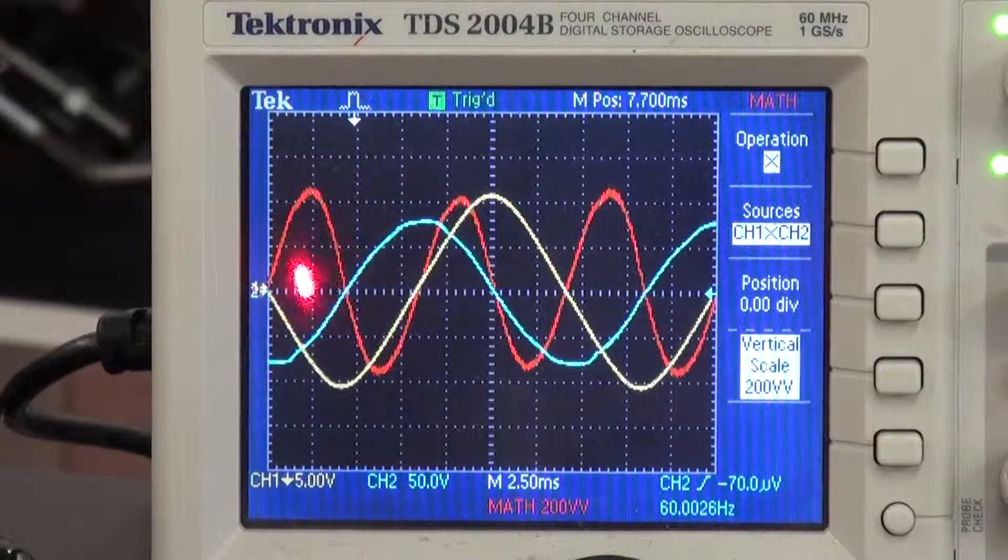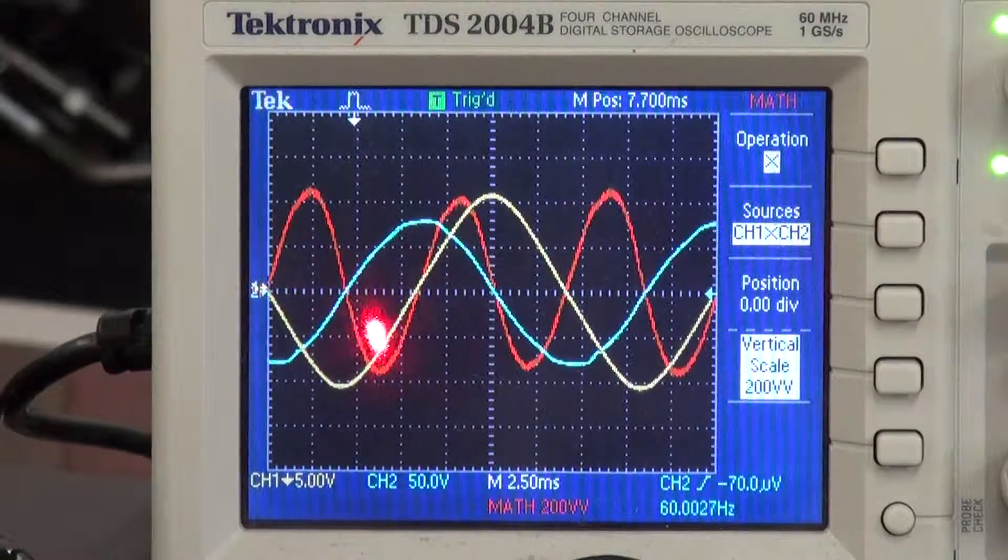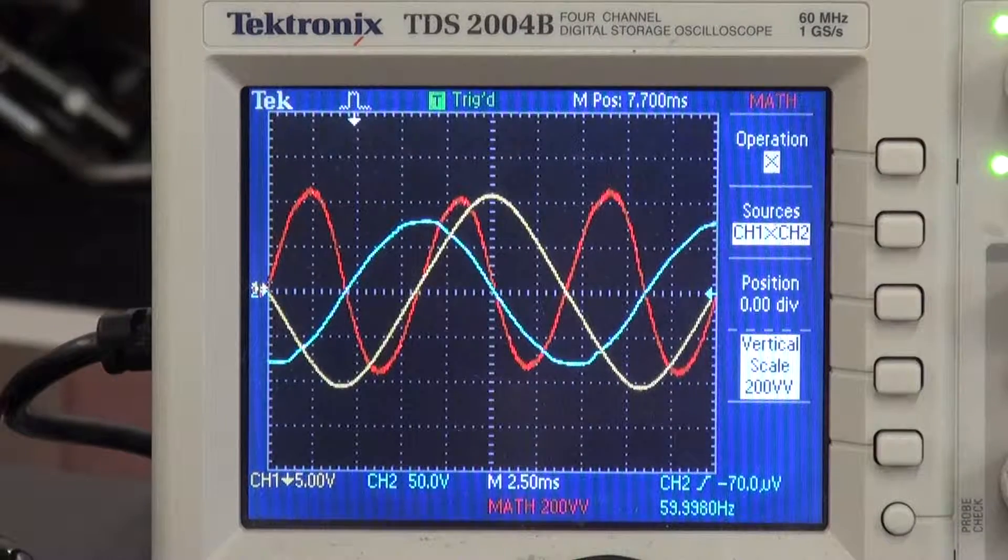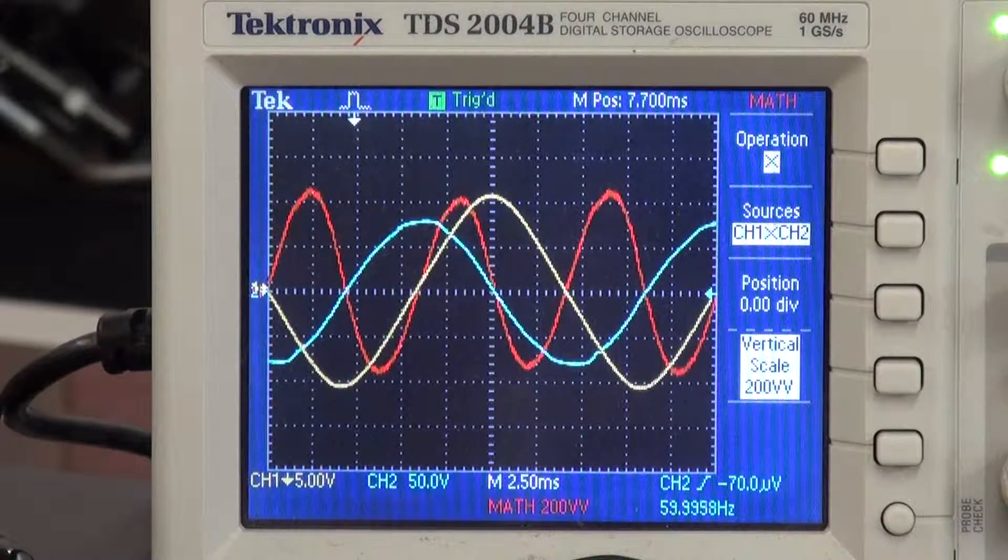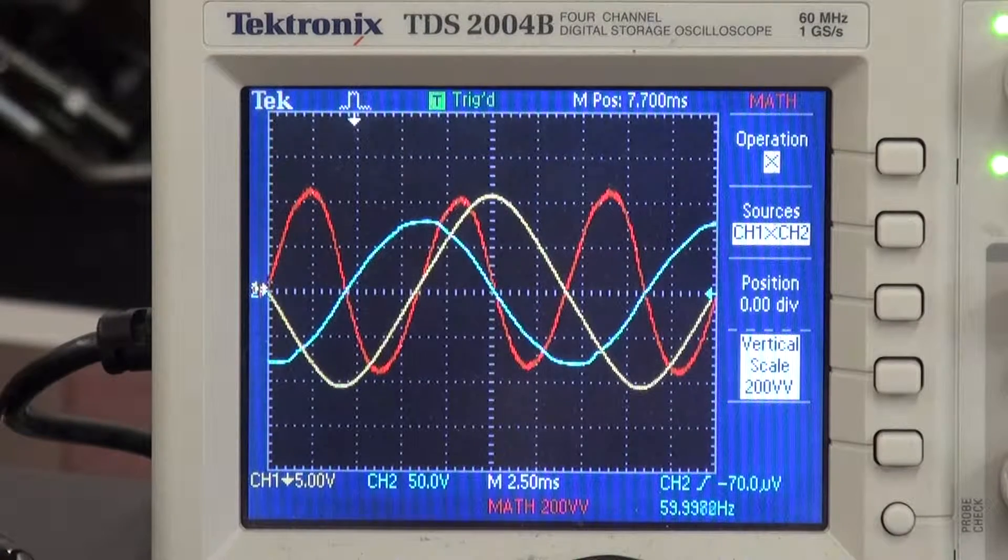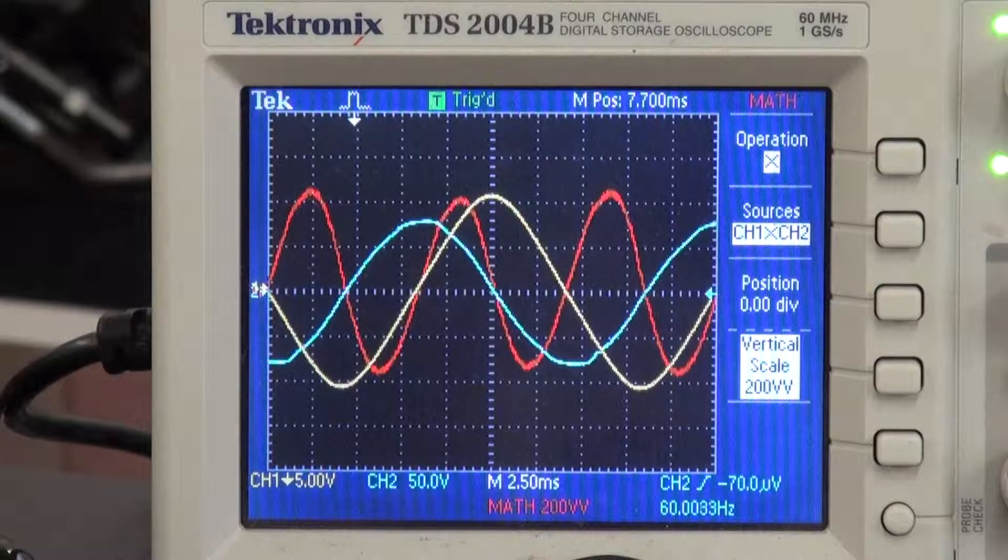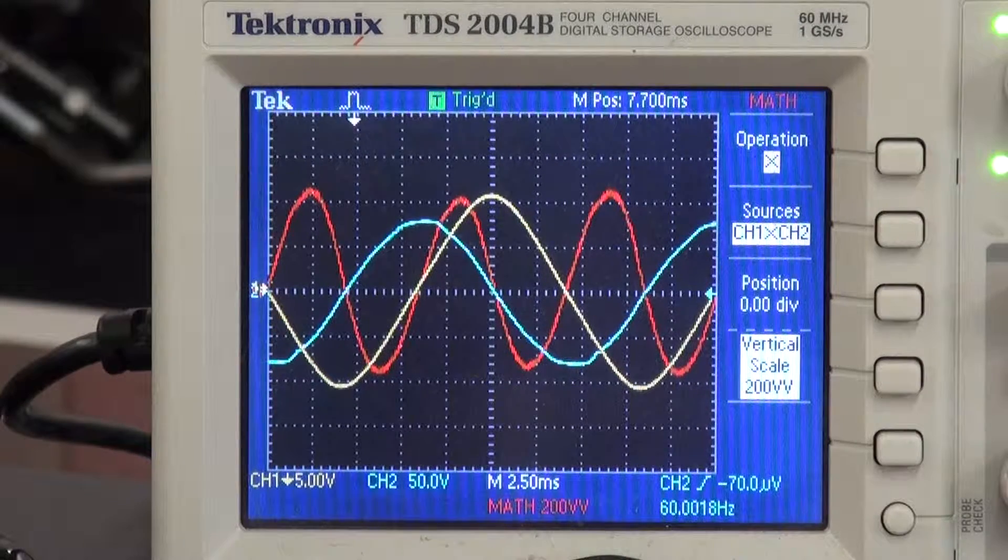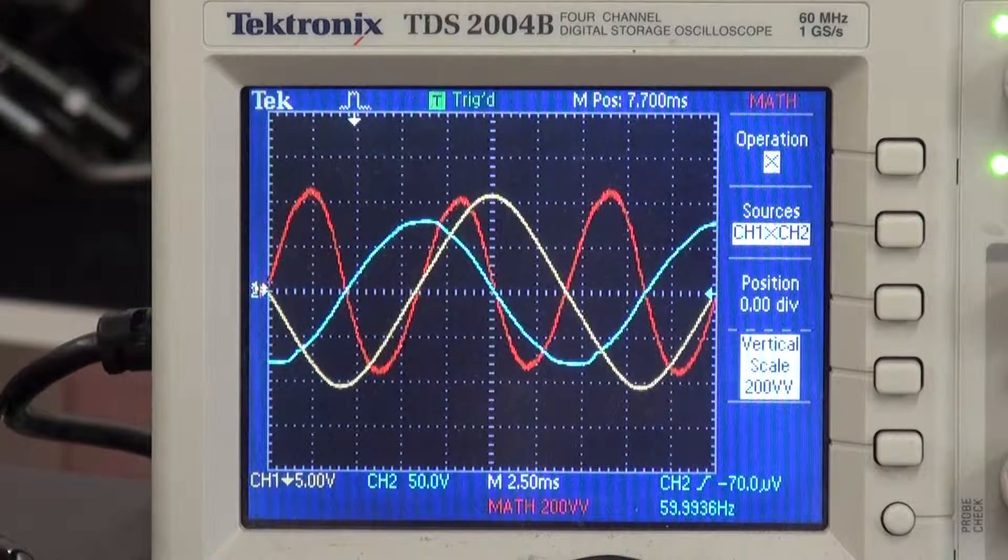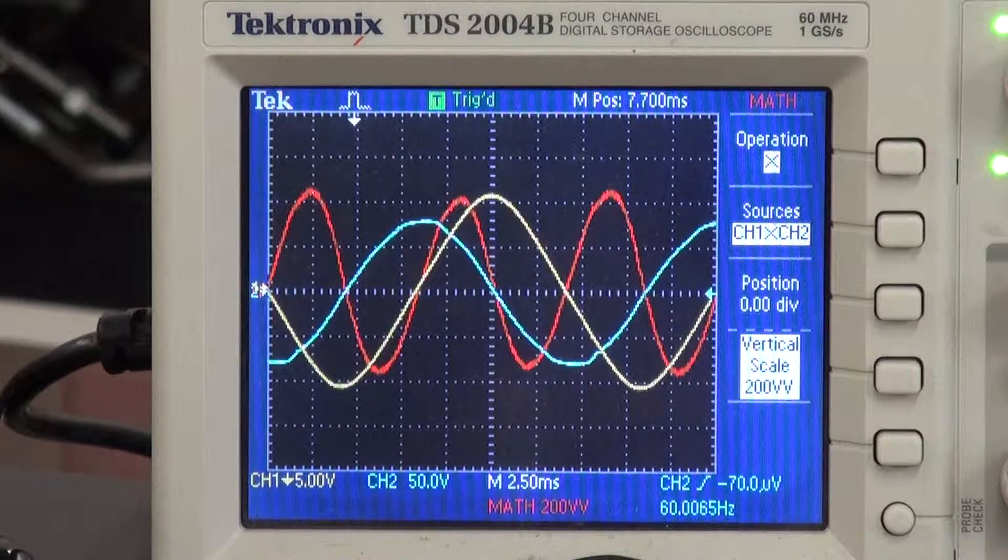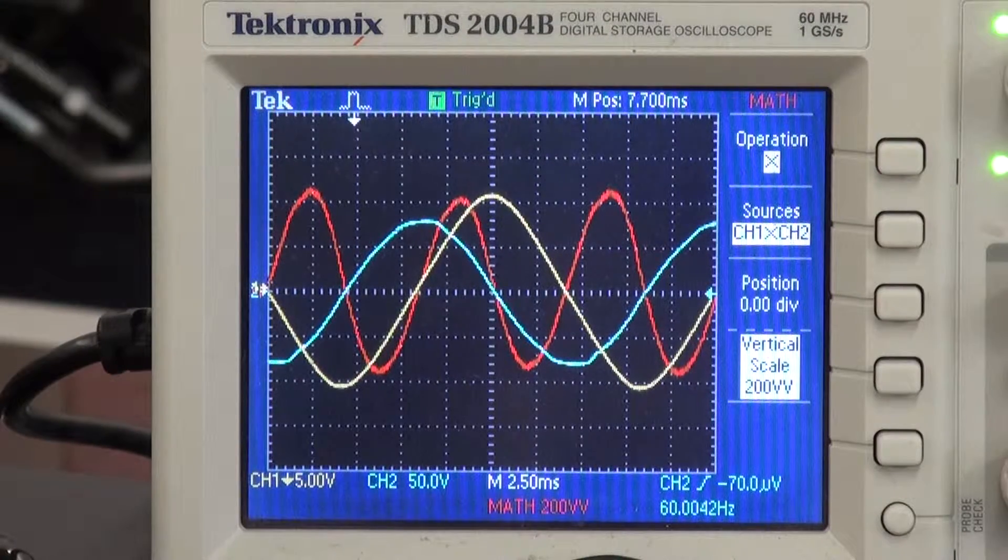We can see that the bottom portion of the power sine wave is slightly smaller than the top portion, meaning that a small portion of power being consumed in the bi-toroid transformer's primary is real power.